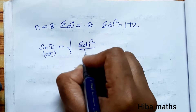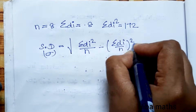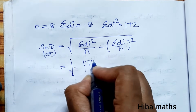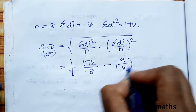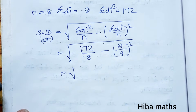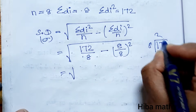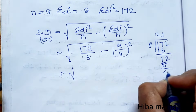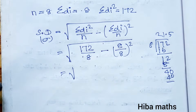The standard deviation formula is: σ = √(Σdi² / n − (Σdi / n)²). Now substituting: 172 divided by 8, minus (8/8) whole squared. Computing 172 ÷ 8: 8 × 2 = 16, balance 12; continuing the division gives approximately 21.5, minus 1 squared. Result is approximately 0.5, so we proceed to get σ ≈ 4.527.